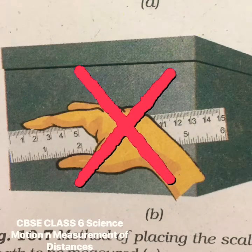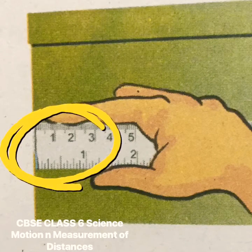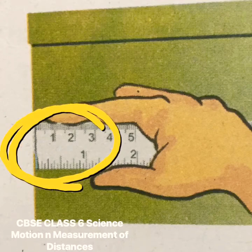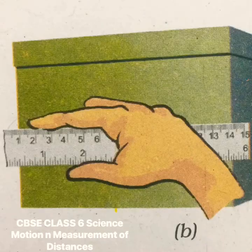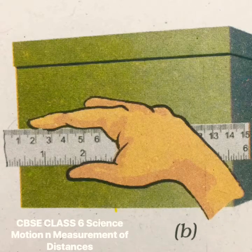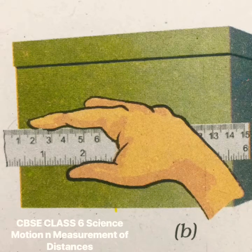Figure B shows an incorrect method. In some scales the end may be broken and you may not be able to see the zero mark, as shown in the figure. In such cases you should avoid taking measurements from the zero mark. You can use any full mark of the scale, say 1.0 centimeter, as shown in the figure.